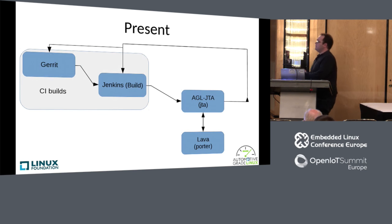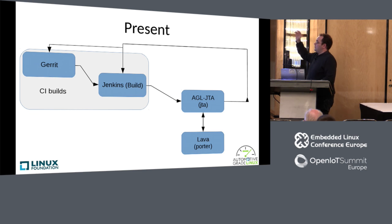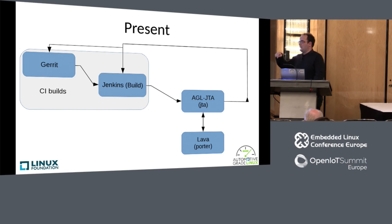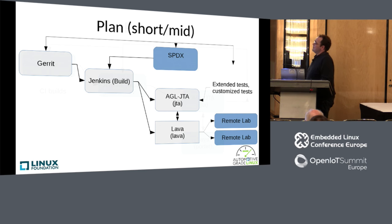How we combine them: at the moment, we have Gerrit and Jenkins for the builds, JTA for running the tests, and we get the board through Lava. Jenkins basically pushes a job to Lava, requests the board, and accesses it. Then it runs the battery of tests, and we get the messages back in Gerrit. The plan is to have those remote labs, which we should be able to do now. We also have in mind adding SPDX to the build, but that's mainly a build issue and doesn't have that much to do with testing.